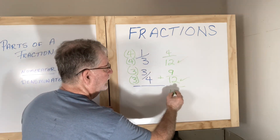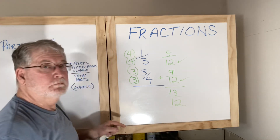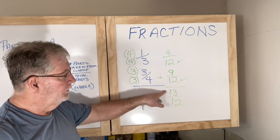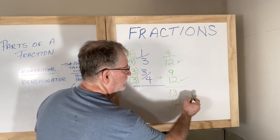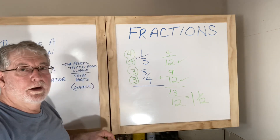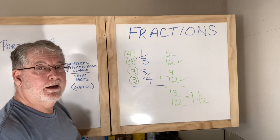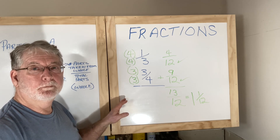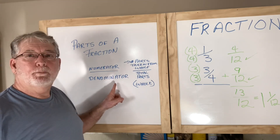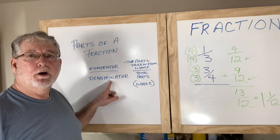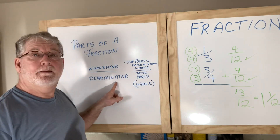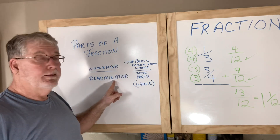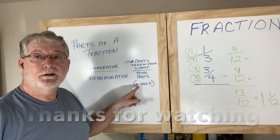Nine plus four is thirteen, giving thirteen twelfths. Now thirteen twelfths is a little more than a whole, because there are twelve parts in the whole circle — so there's one extra. One and one twelfth would be the final answer. Fractions are not complicated. Adding and subtracting fractions is very easy and straightforward, something I hope you can practice at home. Remember: a fraction has two parts — the numerator on top, which is the number of parts taken from the whole, and the denominator on the bottom, which is the total number of parts that make up the whole.